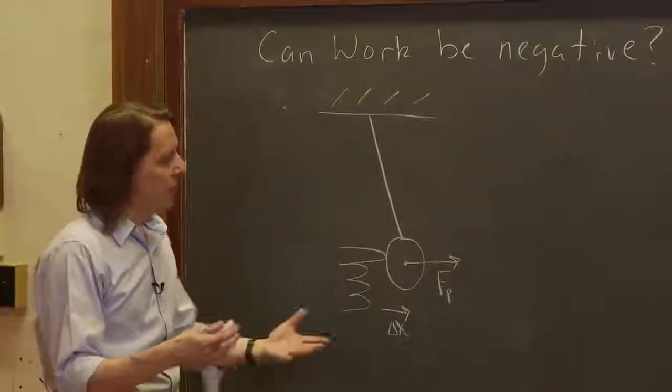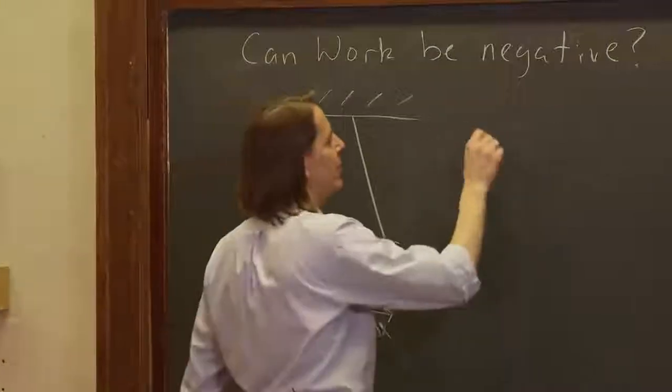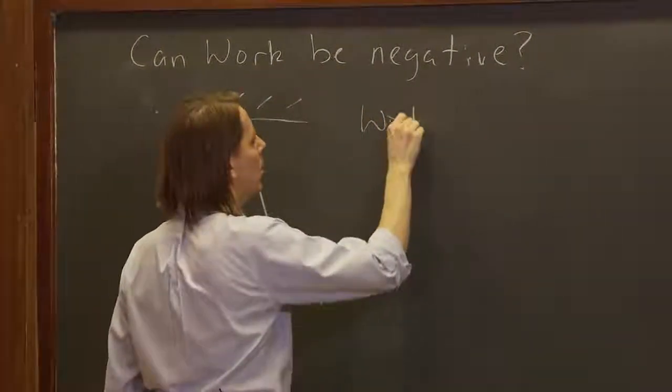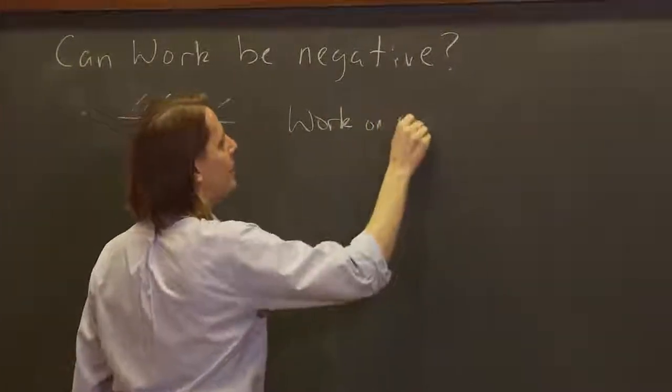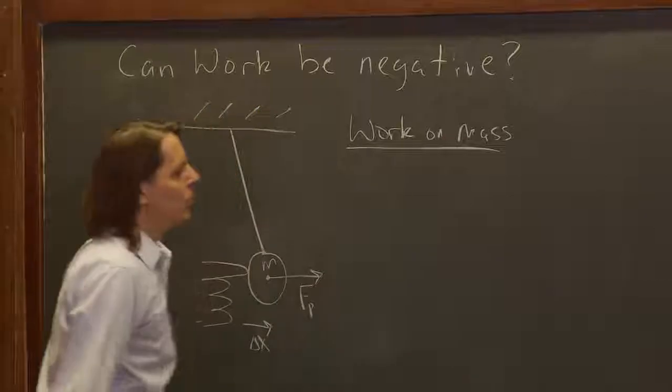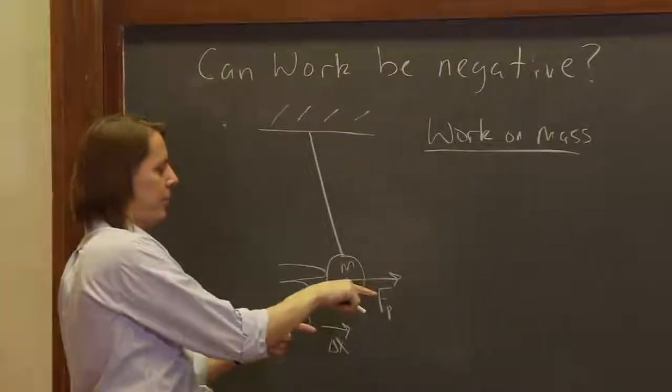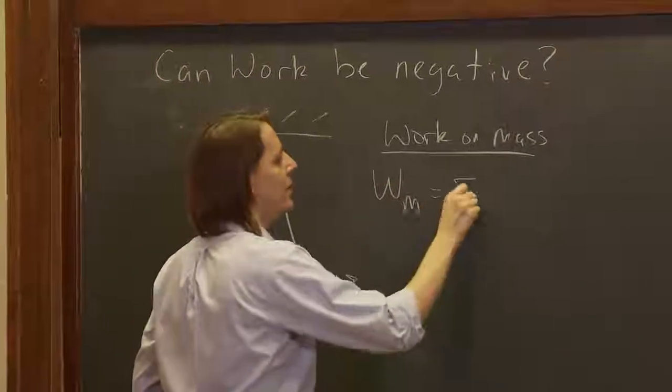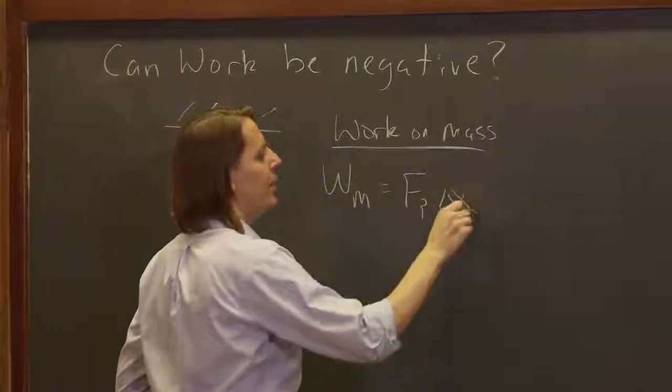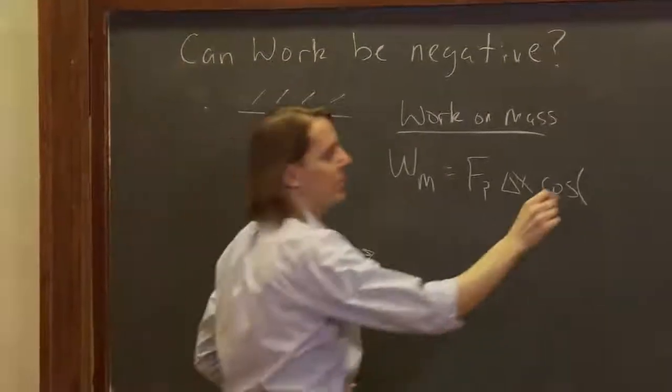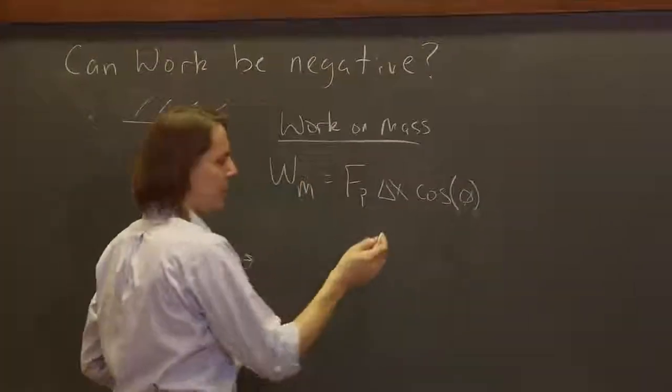So let's first look at the work on the pendulum. We can say the work on the mass of the pendulum, say it has mass m, would look something like this. It's just that force times that delta x. The work on the mass is Fp times delta x times the cosine of the angle between them, but that's zero, right? So the cosine of zero is equal to one.